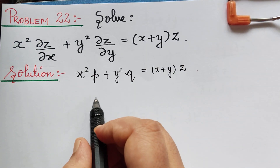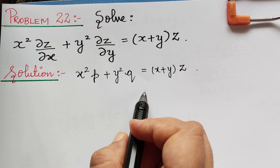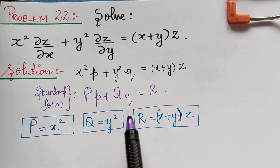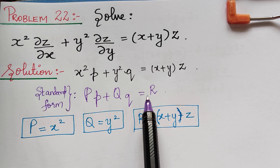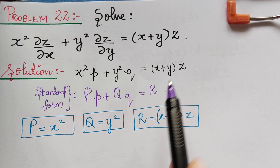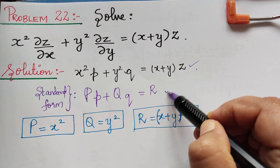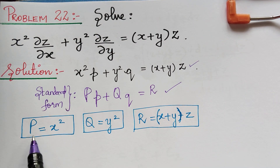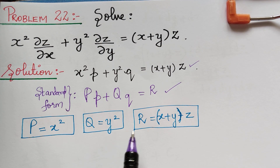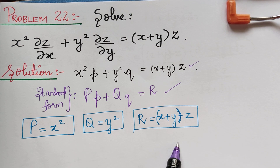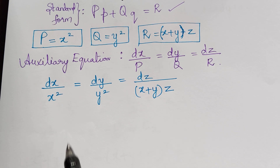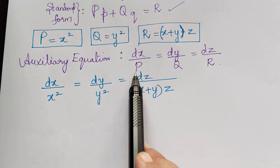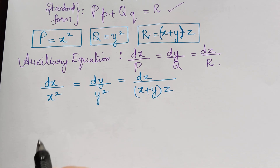Comparing with the standard form, the standard form is given by capital P times small p plus capital Q times small q is equal to capital R. On comparing, we have written the values of P, Q, and R. We shall now write the auxiliary equation for Lagrange's form, substituting the values of P, Q, and R.